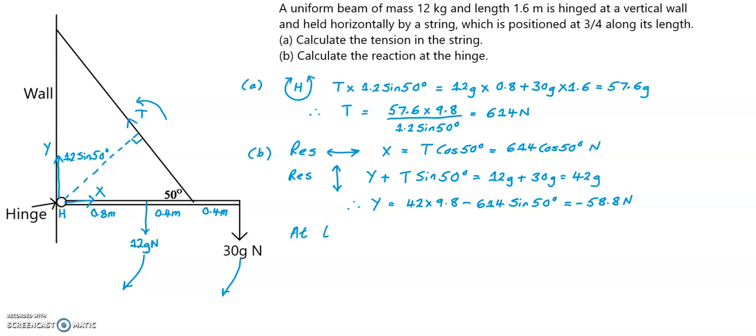So at the hinge, we have a horizontal force which is x acting to the right, which is 614 cos 50 degrees. So because Y is actually acting vertically downwards, shown here, this is 58.8, right angle there. These form the hypotenuse of the right-angled triangle. I'm going to denote this as RF, which is the resultant force acting at the hinge.